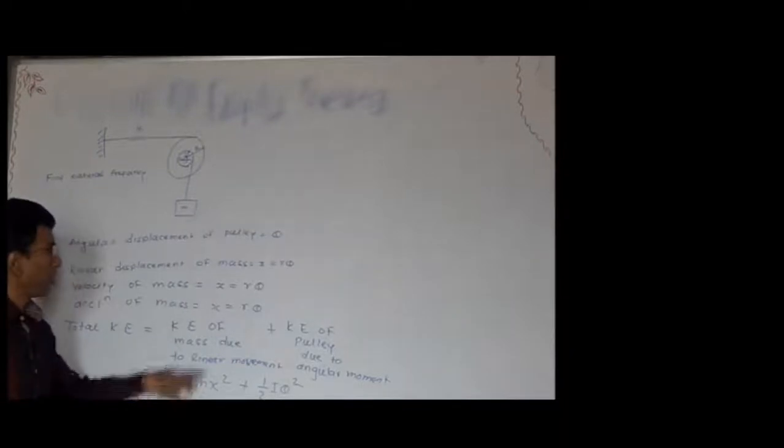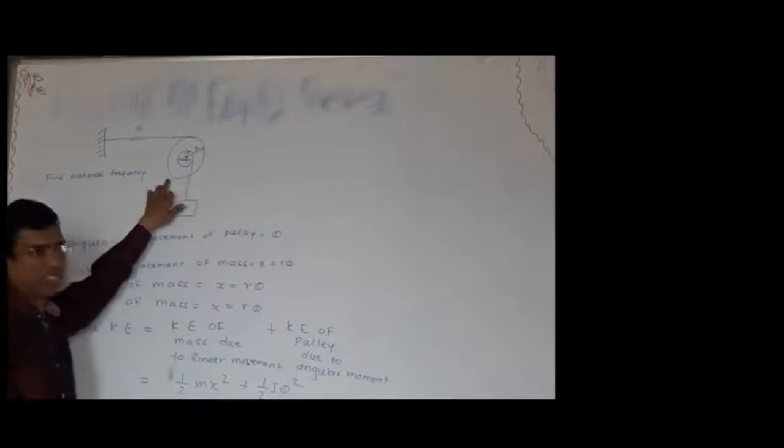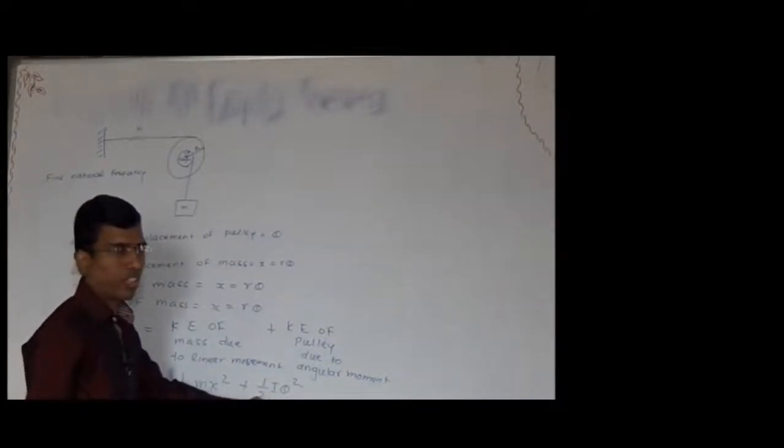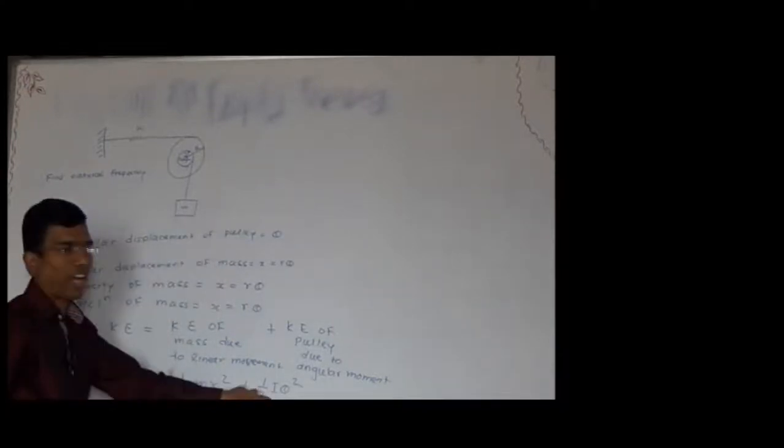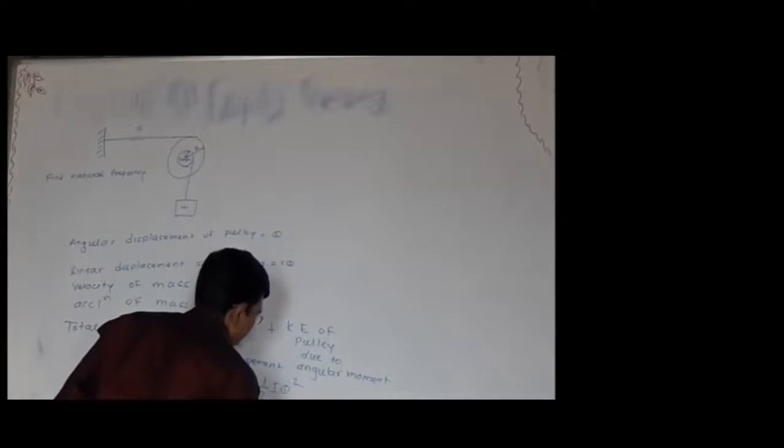Here m is the mass, x-dot is the velocity, I is the moment of inertia of the disk which is one-half m·R-squared, and theta-dot is the angular velocity. Substituting x-dot equals r·theta-dot, we get one-half m·r-squared·theta-dot-squared. The value of I is one-half m·R-squared. Capital R is the radius of the disk.